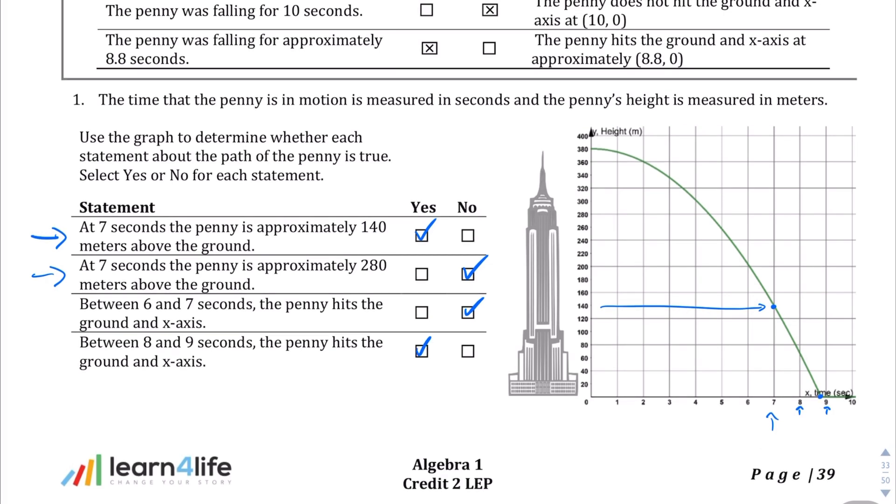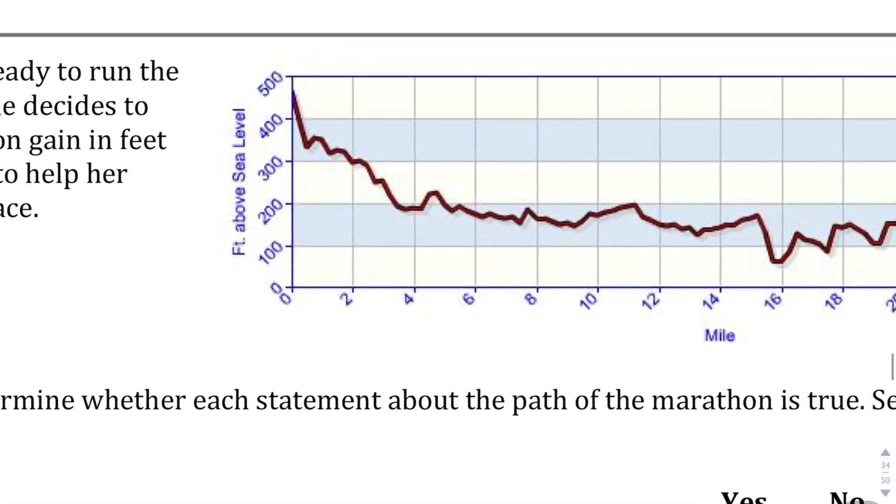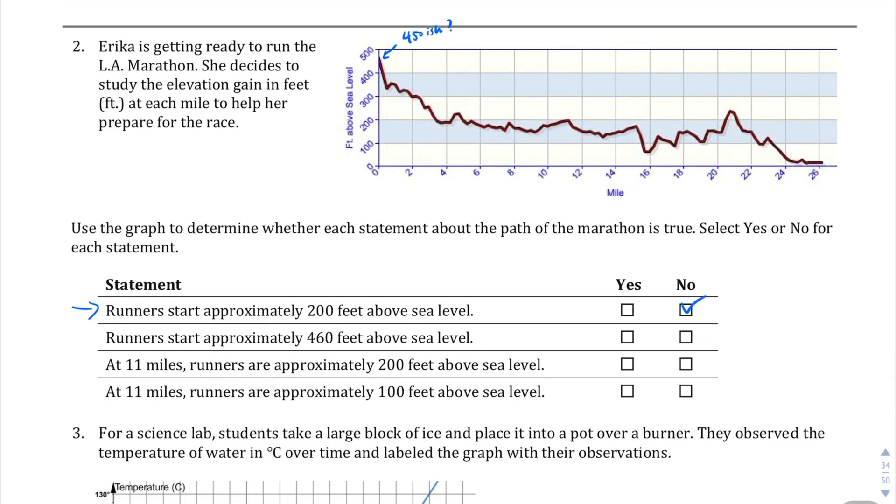Okay, nice and easy. Moving on. Erica is getting ready to run the LA Marathon. She decides to study the elevation gain in feet at each mile to help her prepare for the race. Let's use the graph to determine whether each statement about the marathon is true. First one: runners start approximately 200 feet above sea level. Let me see. That's not the most accurate statement. It's probably closer to 450-ish, so I'm going to say no.